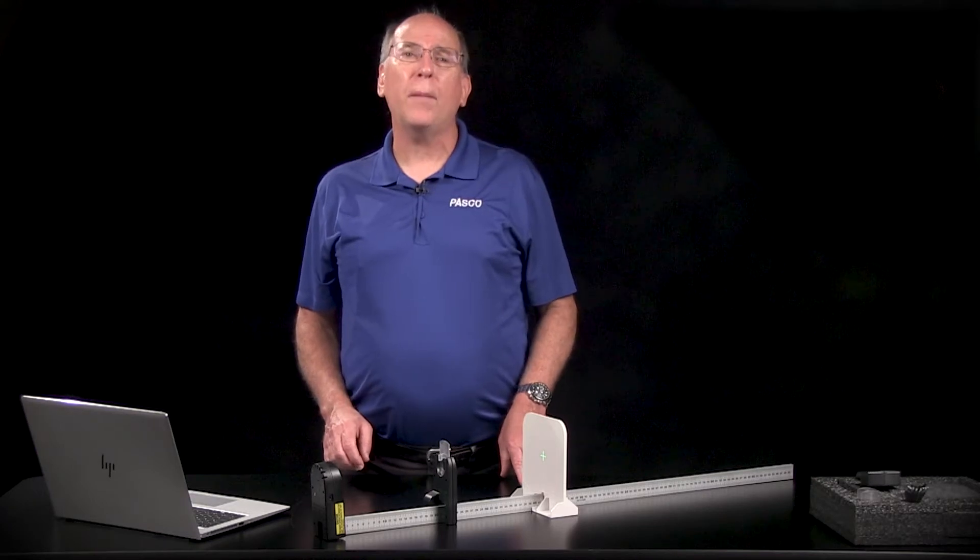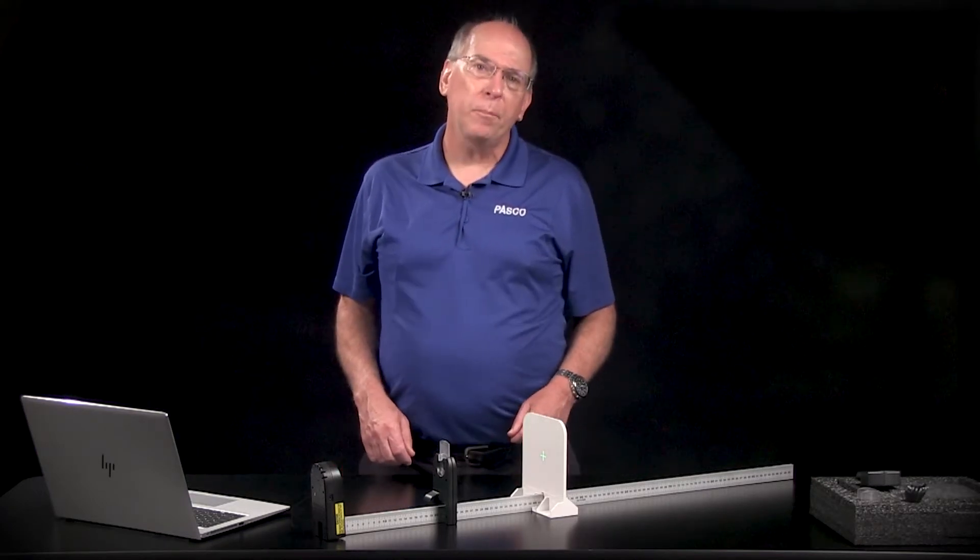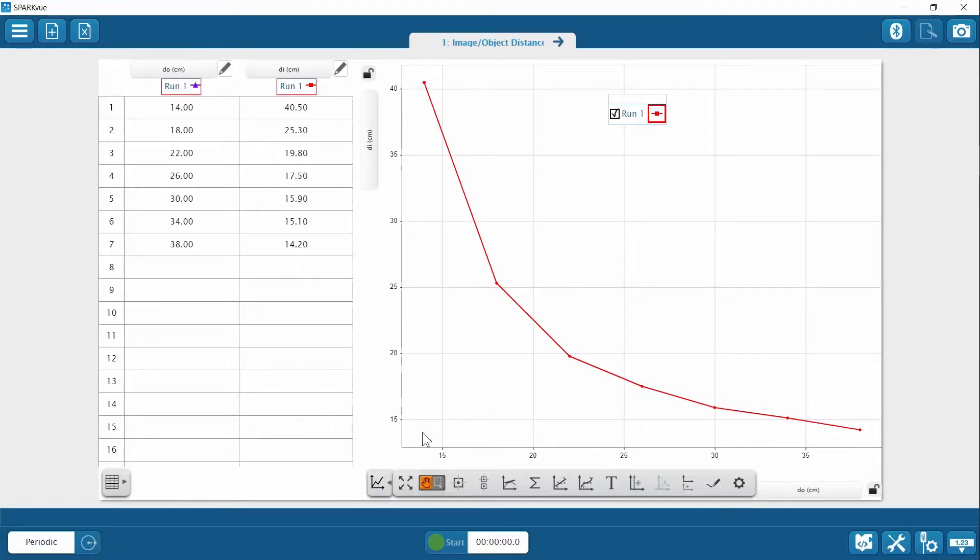SparkView and Pasco Capstone software make it easy for students to analyze their data. After entering their measurements, they create a graph of image distance versus object distance. I started at 14 centimeters and added 4 centimeters for 7 points. I get a curve graphing image distance versus object distance, concave up.